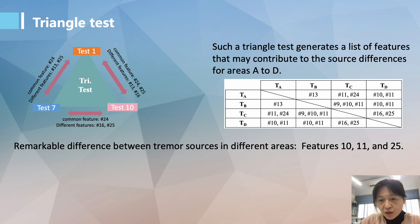And using the feature histograms, we found that feature 10, feature 11, and 25 stand out, which shows the biggest difference between the four areas. So now, the question is, what can these three features tell us?